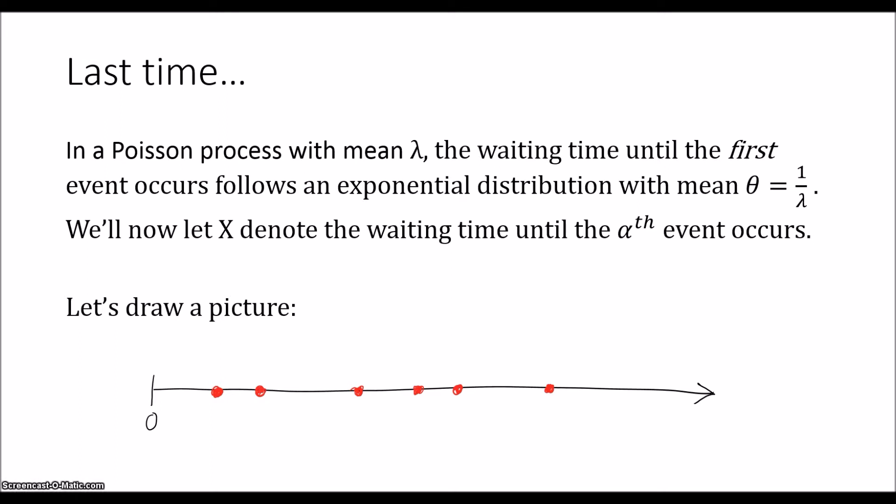Now if we're interested in the αth event, we want to know the amount of time that passed before that event occurred. And that's going to be our random variable X, just to give us an idea of what we're really modeling.